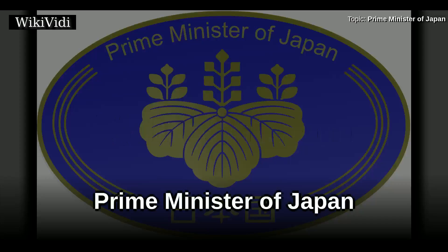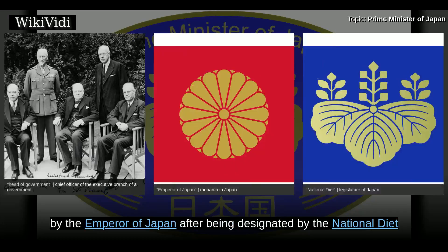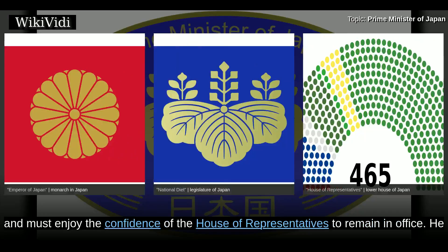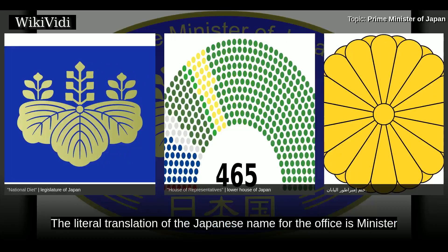Prime Minister of Japan. He is the head of government of Japan. The prime minister is appointed by the emperor of Japan after being designated by the national diet and must enjoy the confidence of the House of Representatives to remain in office. He or she is the head of the cabinet and appoints and dismisses the other ministers of state. The literal translation of the Japanese name for the office is Minister for the Comprehensive Administration of the Cabinet.